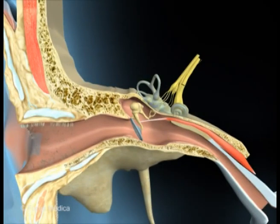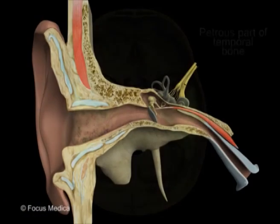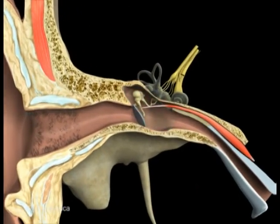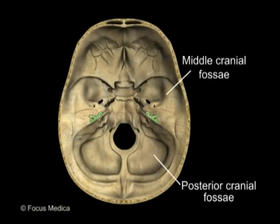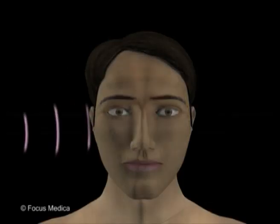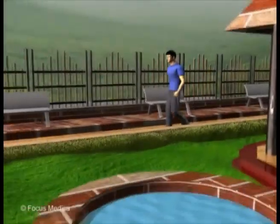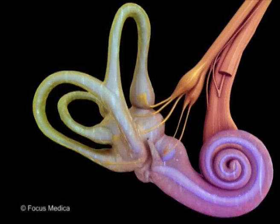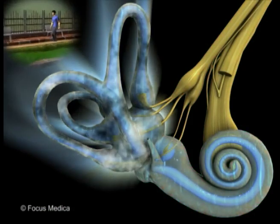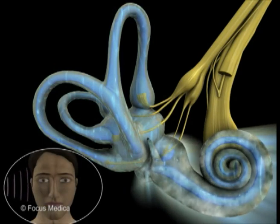The internal ear is entirely located in the petrous part of the temporal bone. It is related medially to the tympanic cavity, and the middle and posterior cranial fossae are medial and above it. The internal ear is concerned with reception of sound and maintenance of balance. It is made of two parts: the vestibular, for balance, and the cochlear, for sound.